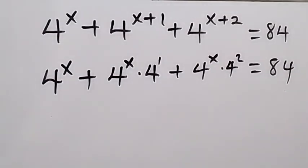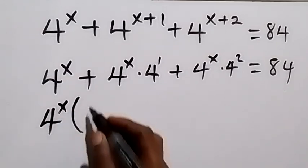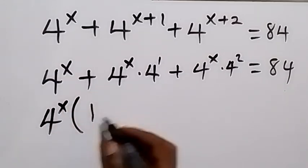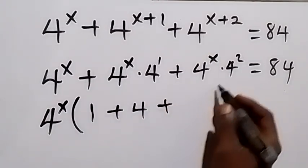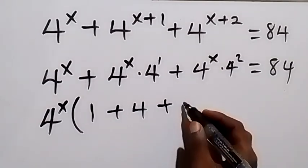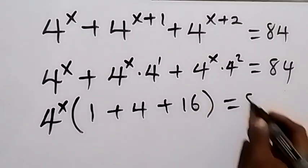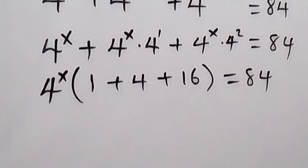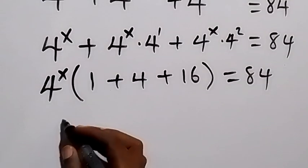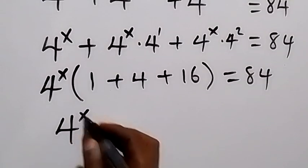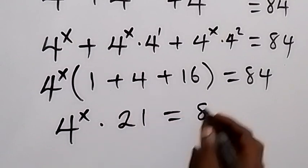We can see that 4 raised to power x is common here, so let's factorize it out. That leaves 1 plus 4 plus 4 raised to power 2, which is 16. Adding these together: 1 plus 4 plus 16 gives us 21, so we have 4 raised to power x times 21 equals 84.